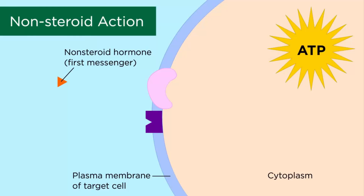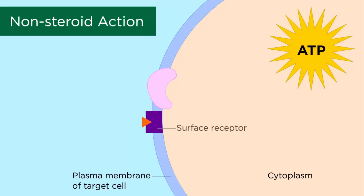There are two main mechanisms for which a hormone can affect a target cell. The first is by a non-steroid action. This mechanism is employed by an amino acid hormone or a peptide hormone. These hormones cannot freely cross a membrane on a target cell, so they first act by binding a cell surface receptor. There is then an intracellular signaling cascade that occurs in order for the desired effect to take place.